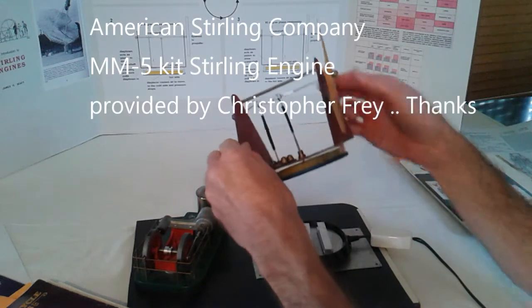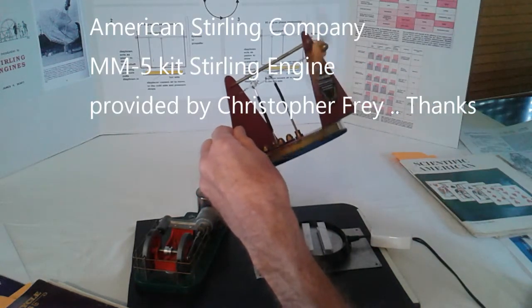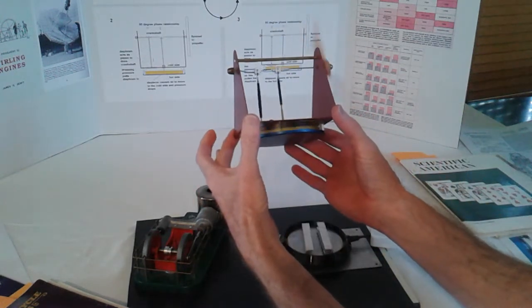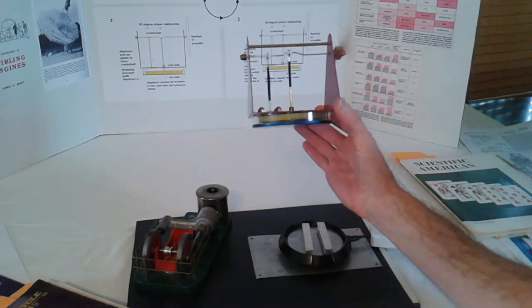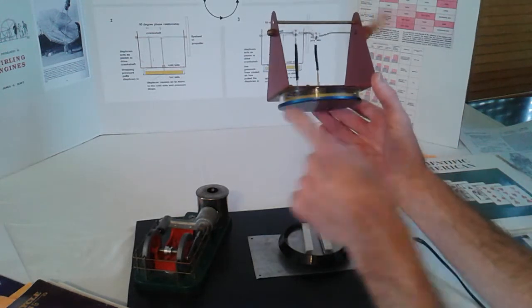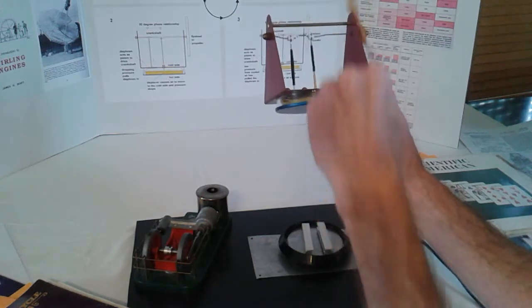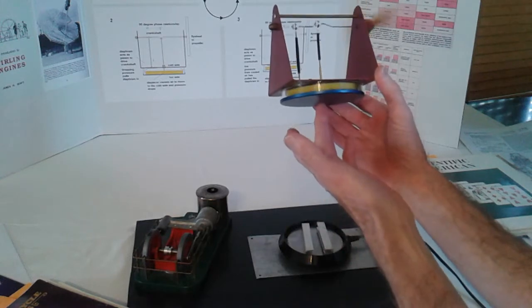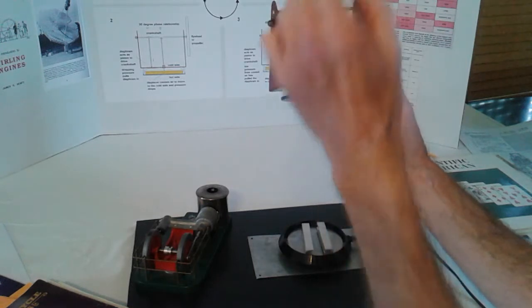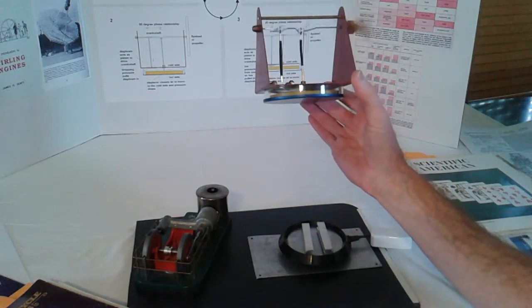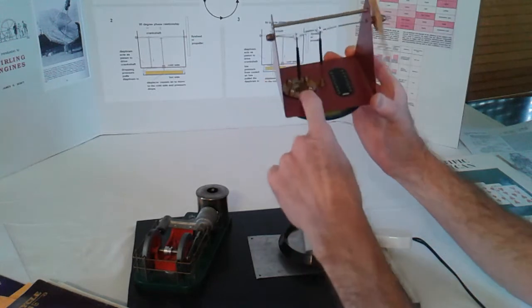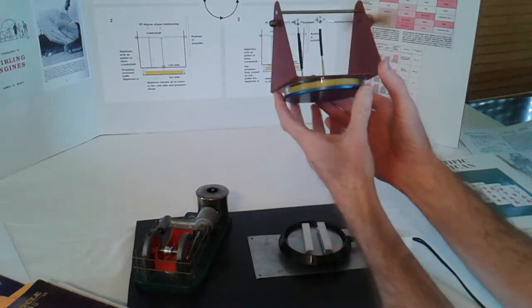This one is an American Stirling Company MM-5 kit Stirling engine. I'm not sure that they make them anymore, but there's a lot of things like it available as kits or completely built. Now, the yellow thing going up and down is not the power piston. That's called a displacer. Air can go around the ends of it, so that just moves the air from one side to the other. The bottom side, which is on the heat plate, is the hot side. It's at 120 degrees when it's on the heat plate. The top side is around 85 degrees, so it's running on about a 35 degree temperature difference. The diaphragm here, going up and down, is actually the power piston.